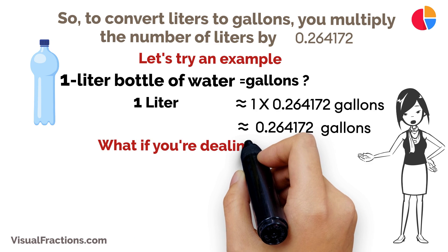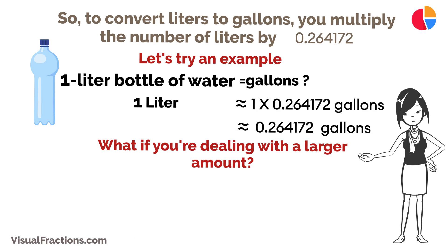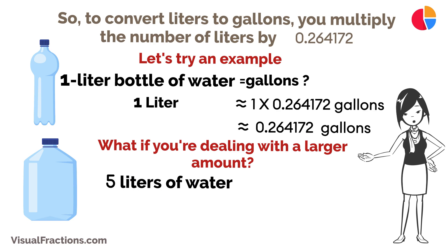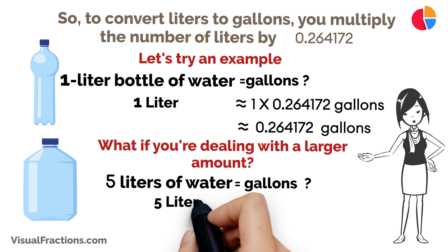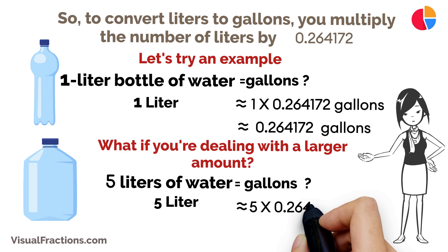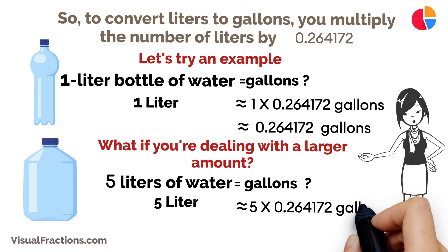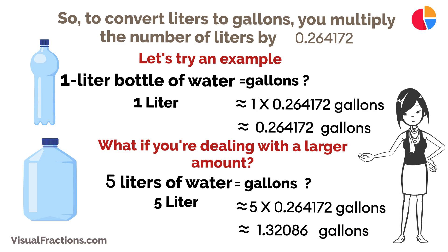What if you're dealing with a larger amount? Suppose you need to fill a tank with 5 liters of water. To find out how many gallons that is, you would multiply 5 liters by 0.264172, which results in about 1.32086 gallons.